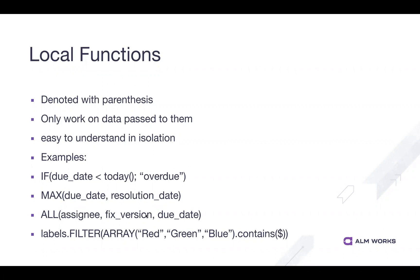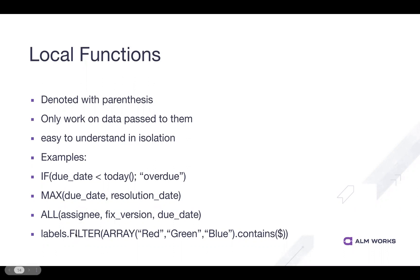The 'all' function checks that all conditions are true. Just like a lot of programming languages, zero is false, any positive number or string is true. So 'all(assignee, fixed version, due date)' is basically saying all of these exist — all return non-zero, non-blank values. There's also a filter example: if I've got a bunch of labels and only some of them matter — say red, green, blue — I can filter the labels array to only return those three. It's a nice way of cutting out the junk and focusing on what's important.